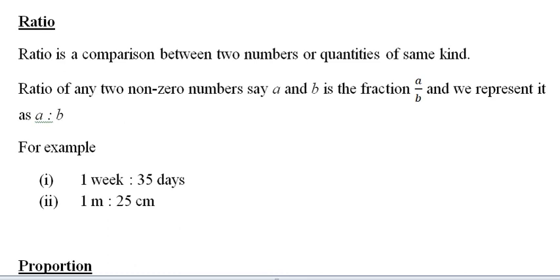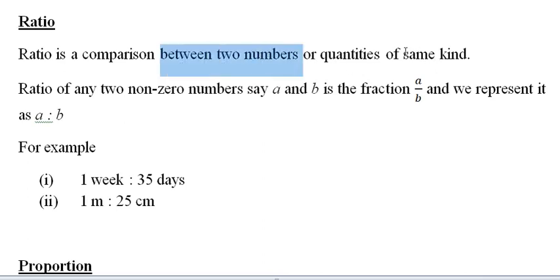Hello dear children. Now we are in chapter number seven called Ratio and Proportion. First we will see ratio, then we will move on to proportion. By ratio we mean a comparison between two numbers or two quantities of the same kind.